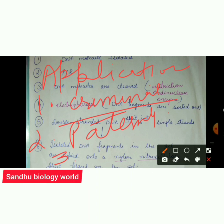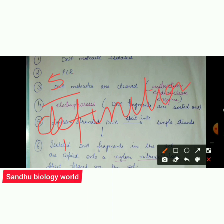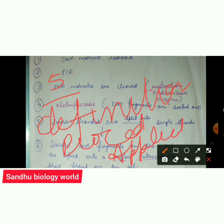Fourth application: genetic markers can be used to diagnose hereditary diseases — diseases passed from parents to offspring — such as sickle cell anemia and thalassemia. So DNA fingerprinting covers definition, procedure, and applications, which are the three most important things.